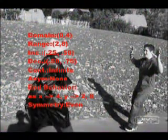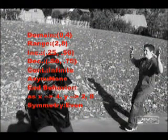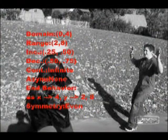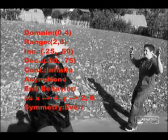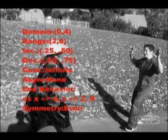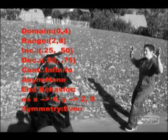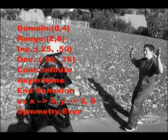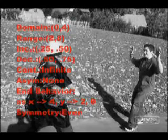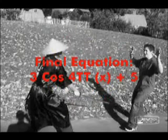And last but not least, the domain, range, and all that other stuff — I'm not going to bother reading all those, so just go ahead and read that yourself. And so, the final equation is 3cos(4πx) + 5.